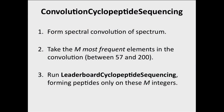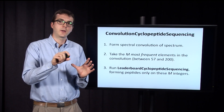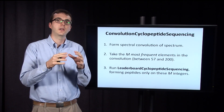We now have the outline of an algorithm called convolution cyclopeptide sequencing. The first thing it does is take the experimental spectrum and form the spectral convolution of it. Then we look at that convolution and find the M most frequent elements between 57 and 200 — M may be 50 or 20 in practice. Then we run the leaderboard algorithm using only those top M masses, forming our peptides only on those integer masses.